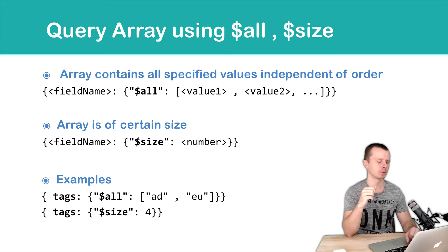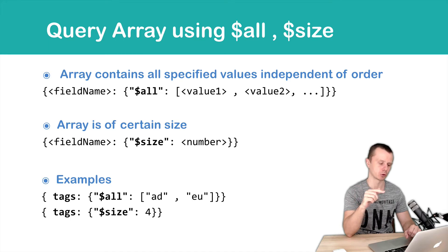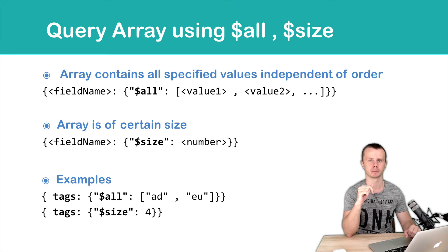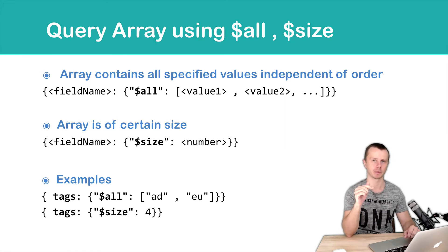Let's look at an example. In the first example, we are looking for documents that have a tags array with at least two tags inside: 'ad' and 'u'. So those two values, 'ad' and 'u', must be present in the tags array. In the next example, tags size four — we are looking for documents that have a tags array with exactly four elements.